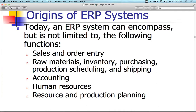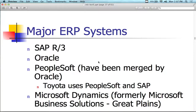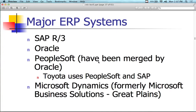Today ERP encompasses, but is not limited to, the following functions. It's typical to see sales and order entry, raw materials, inventory, purchasing, production, scheduling, and even shipping. Counting human resources, as mentioned before, and resource and production planning are also part of the growth of these systems.